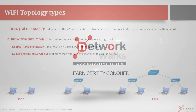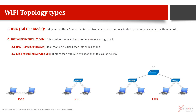Wi-Fi or wireless LANs have three types of basic topologies, which are called IBSS, BSS, and ESS — Independent Basic Service Set, Basic Service Set, and Extended Service Set.